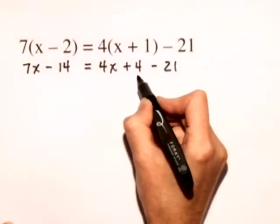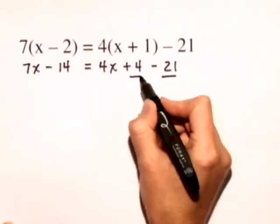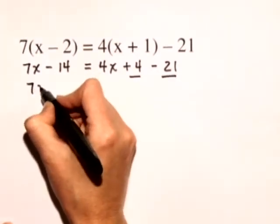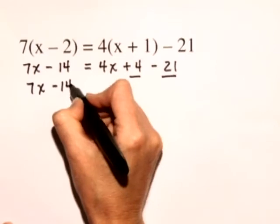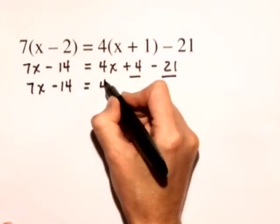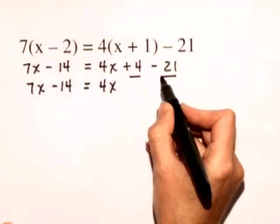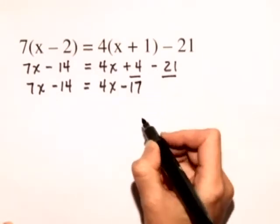Now we'll go ahead and on the right hand side we'll combine the like terms of those two constants. We have 7x minus 14 is equal to 4x plus 4 minus 21 gives us minus 17.